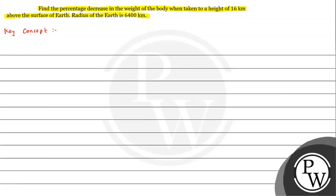That is, how acceleration due to gravity changes when we go above the Earth's surface. First, acceleration due to gravity on the surface is given by the expression g = GM/R². On the surface, this is the maximum value of acceleration due to gravity, where G is the universal gravitational constant with value 6.6 × 10⁻¹¹ N·m²/kg².